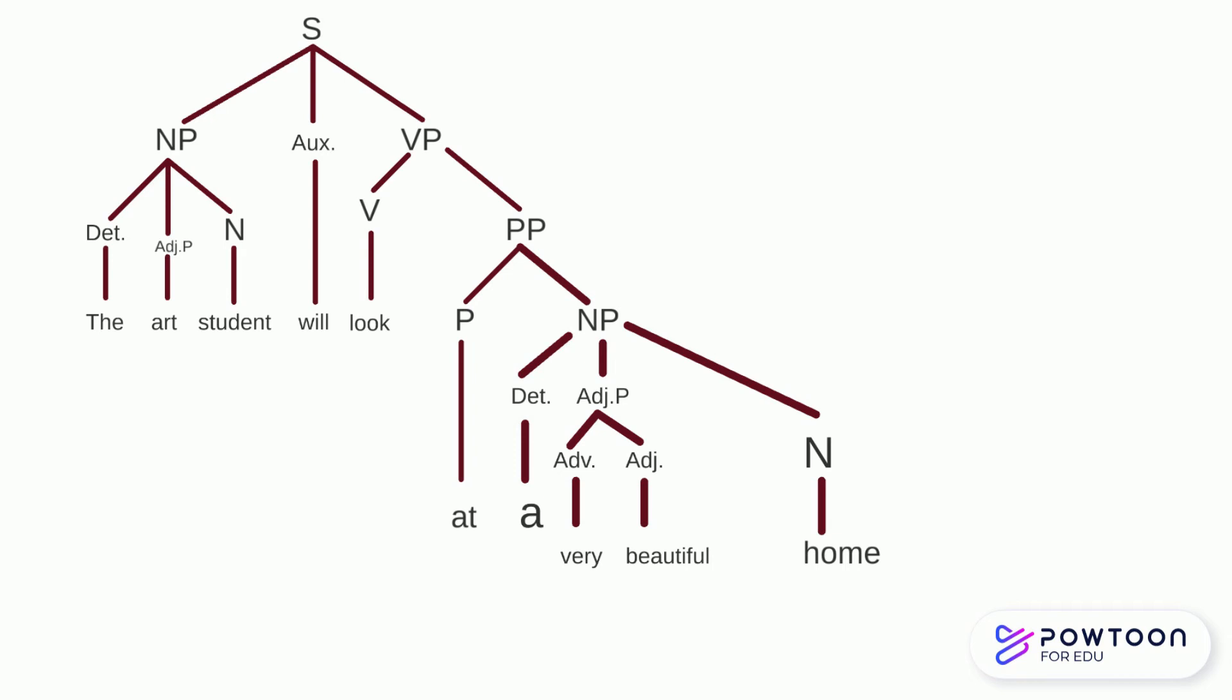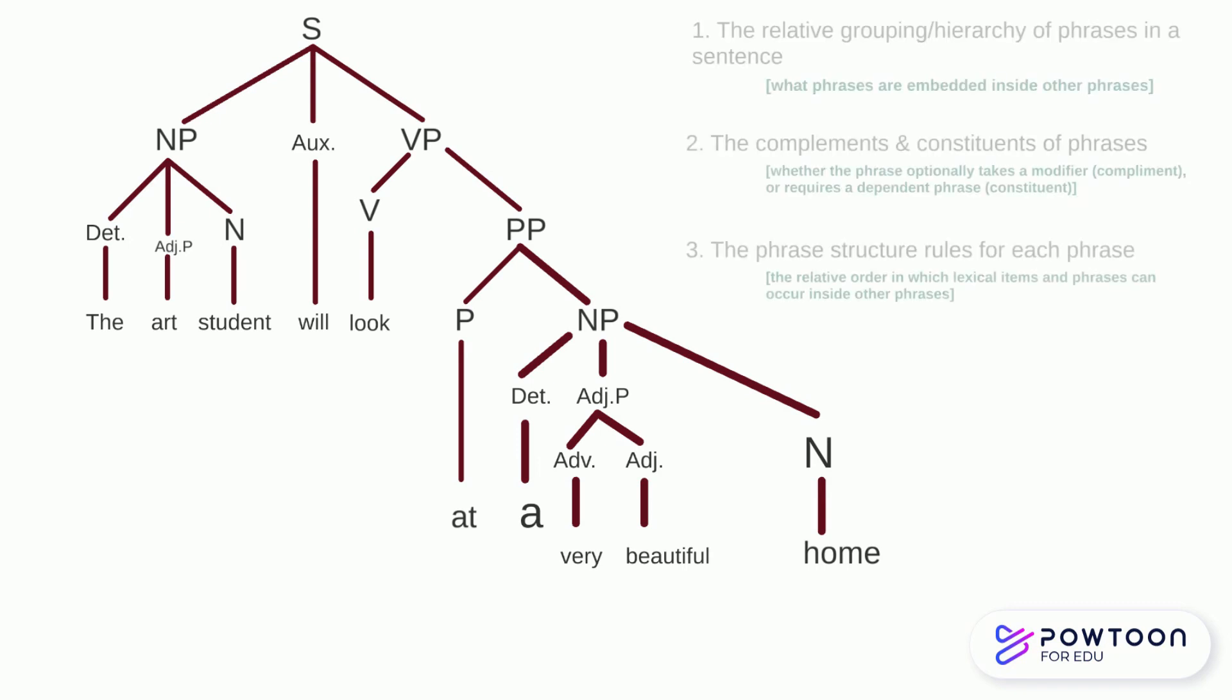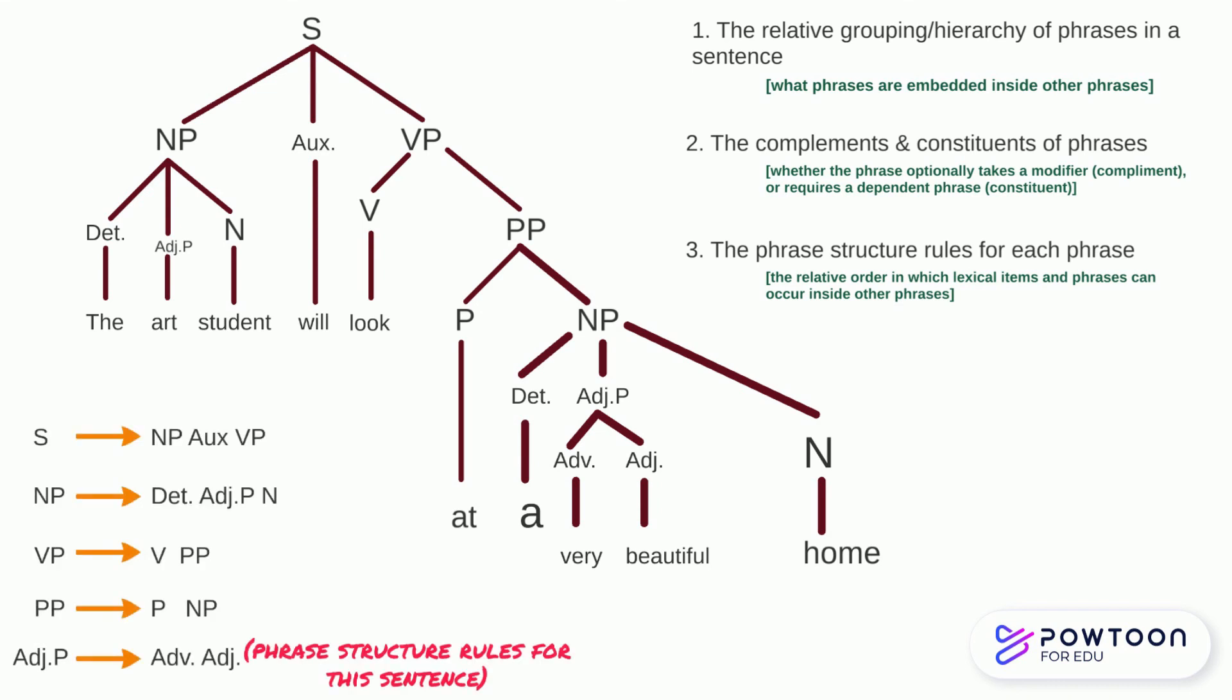Syntax trees, or phrase markers as they are sometimes called, are useful for indicating three things. Firstly, they indicate the relative grouping and hierarchy of phrases in a sentence. Secondly, they indicate which phrases require an obligatory constituent or an optional complement. And finally, syntax trees indicate the phrase structure rules for each phrase.